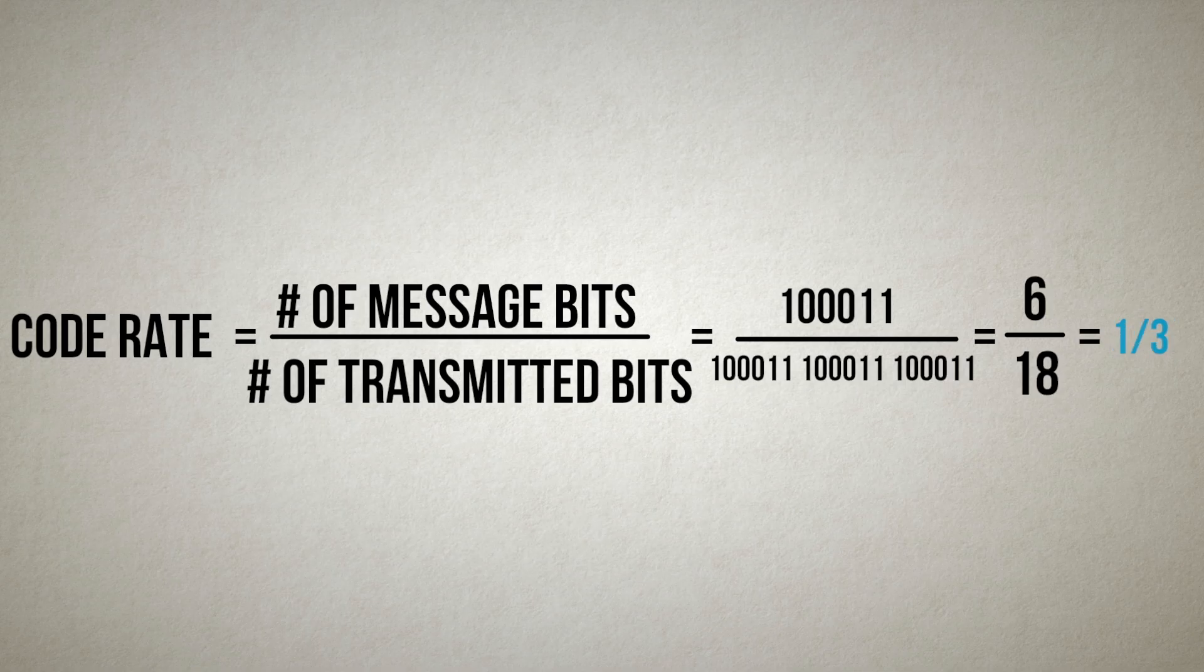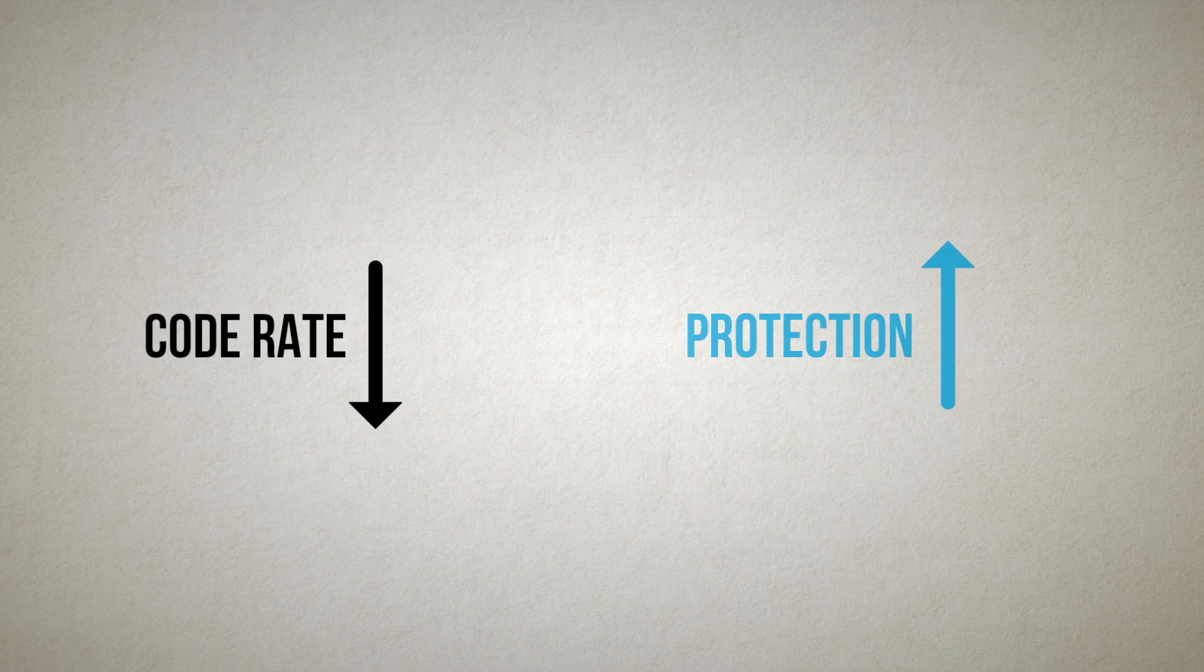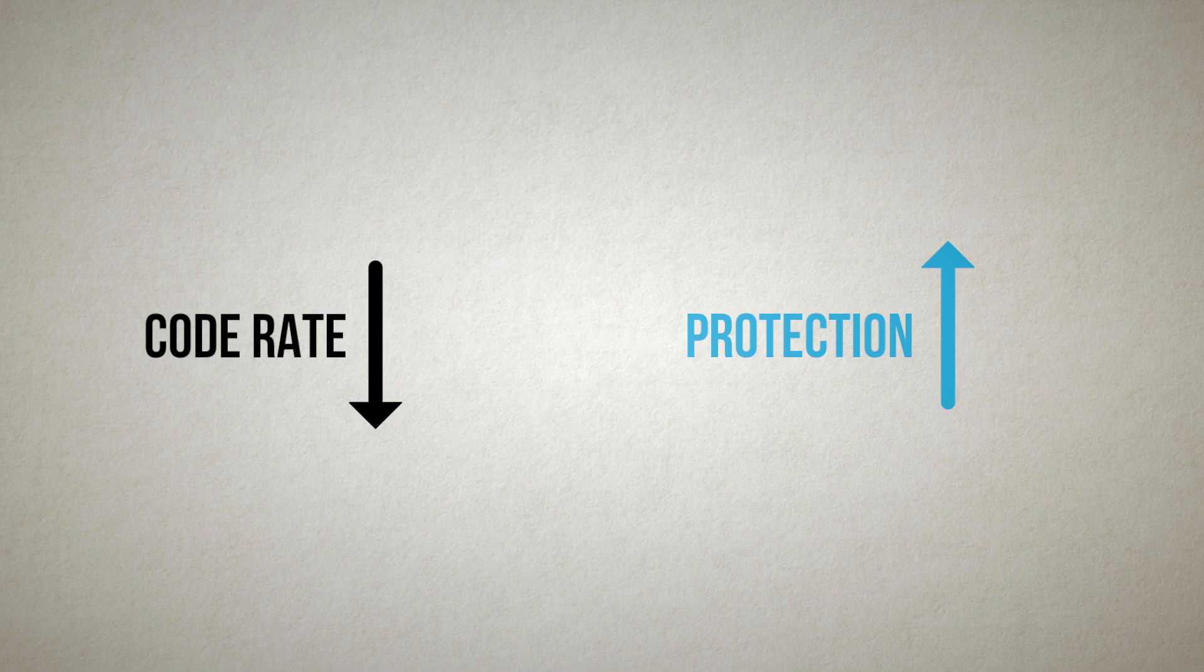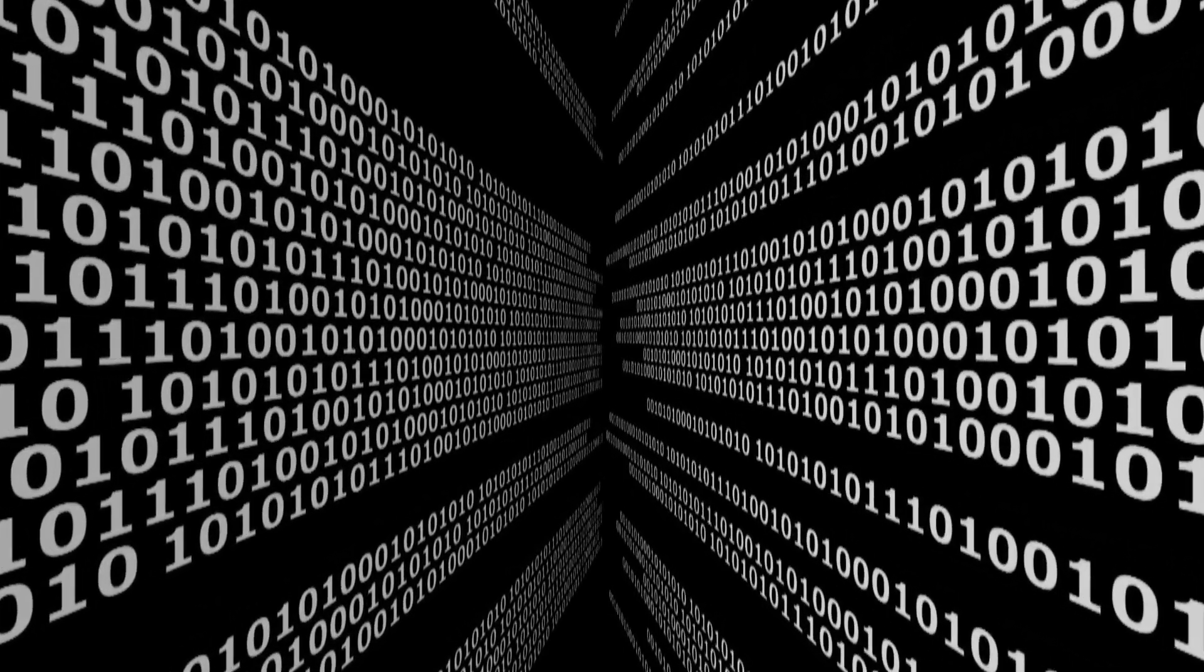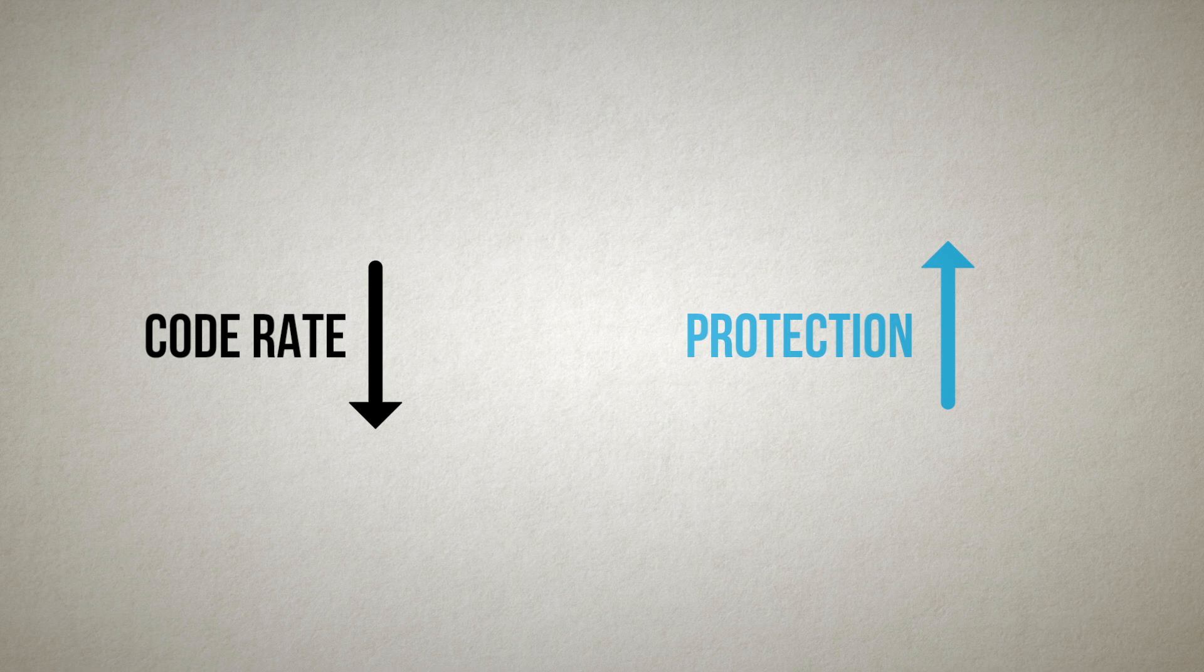If we use triple repetition, the code rate would drop to one-third. As the rate drops, the protection increases, but there are fewer message bits sent. So a lower code rate is a more expensive design, since every bit we transmit has some cost.